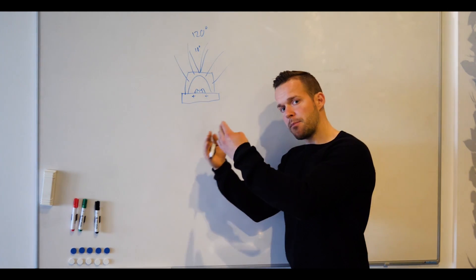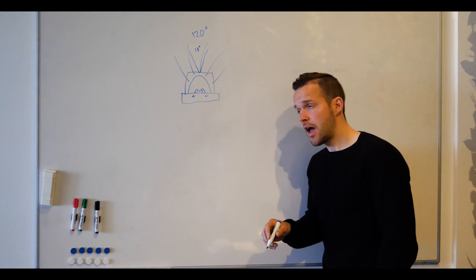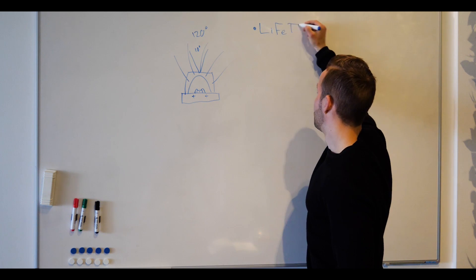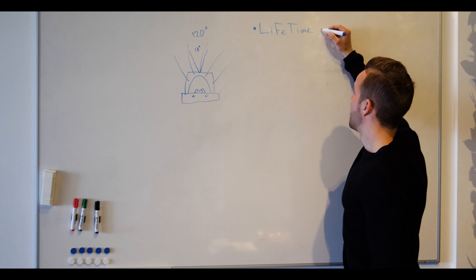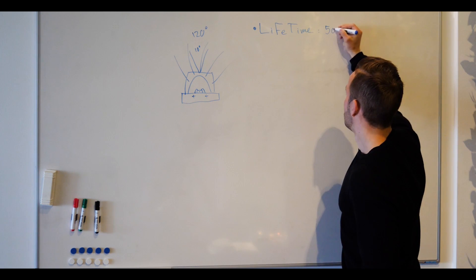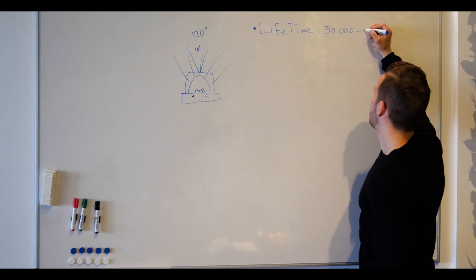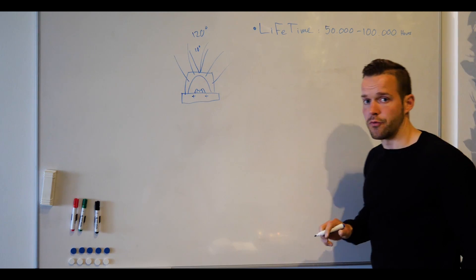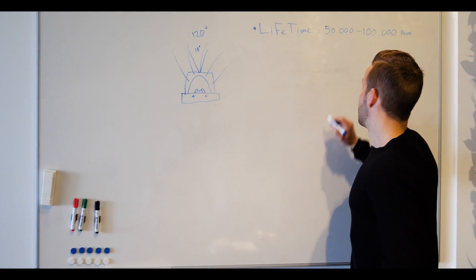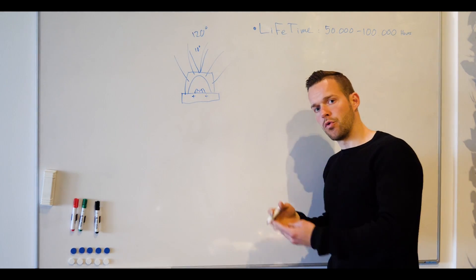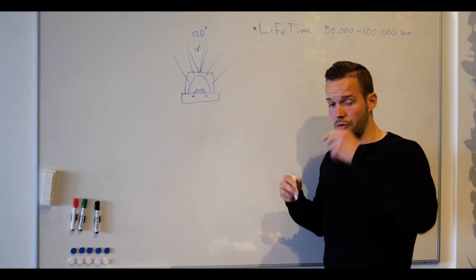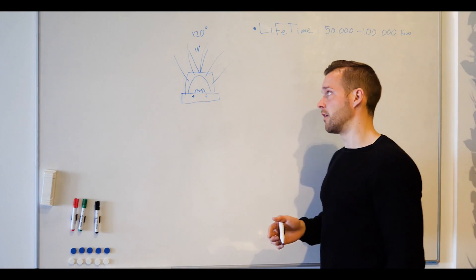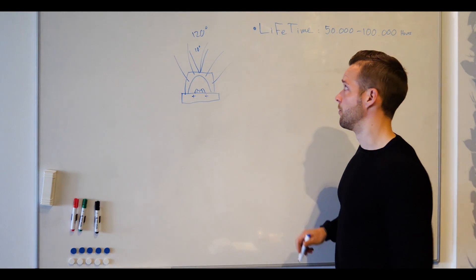So with that being said, we can move over to the advantages that LEDs have. I can start up with the first one, which is lifetime. Lifetime is from 50,000 to around 100,000 hours, and that is approximately how it is. There is of course different lifetimes when we are on the market. It could be for lamps which is only around 10,000 hours. It could be for luminaires which have 200,000 hours. So this is a general setup for what I'm saying now.